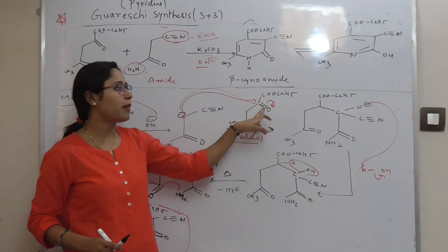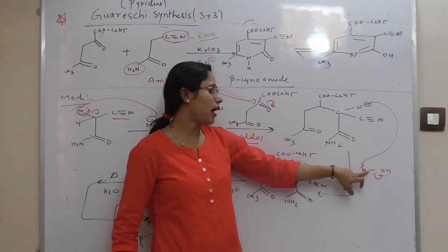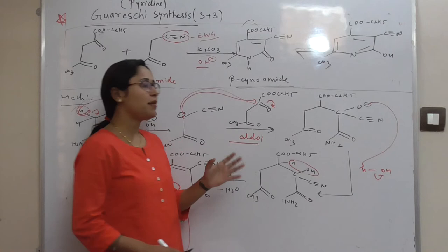Because oxygen electron demand, oxygen negative charge. Now this oxygen, for getting the stability, it will abstract the H plus ion from the water molecule and convert this oxygen into OH form.